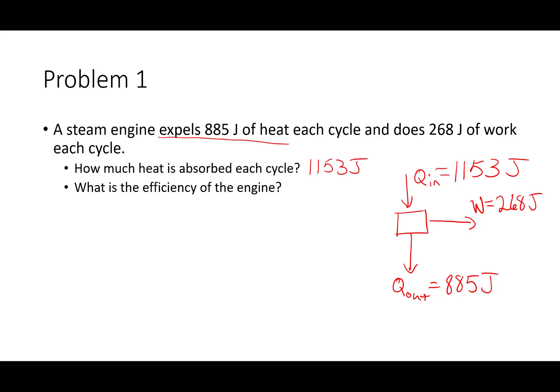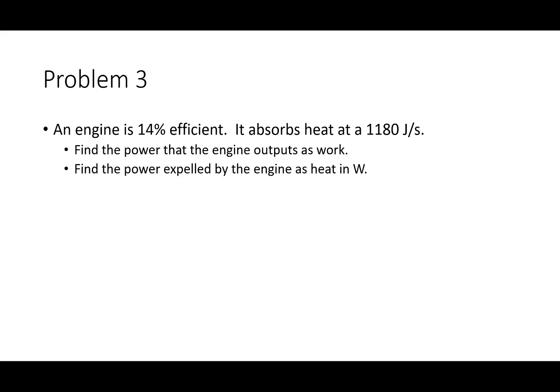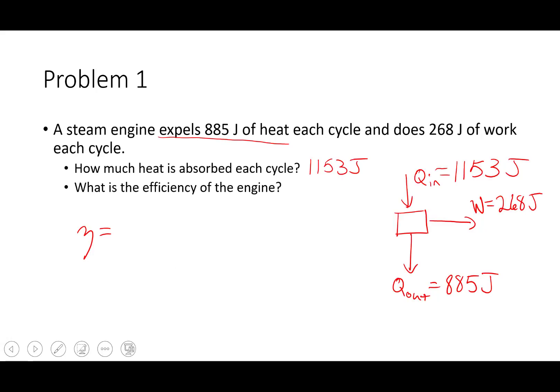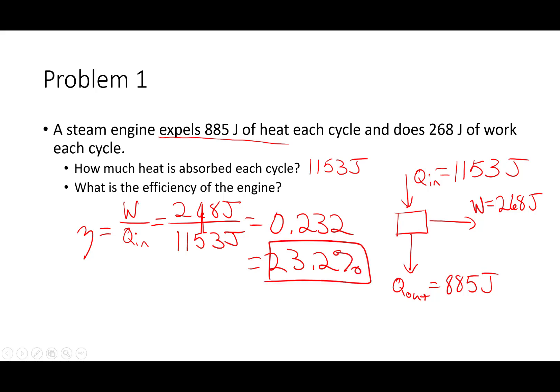The efficiency of the engine, eta, is going to be the useful output over the input. So that's going to be the work over the input, which is just 268 joules over 1153 joules. 268 over 1153 is just 0.232. So 0.232, or we could also write it as 23.2%. Let's take a look at the next one.